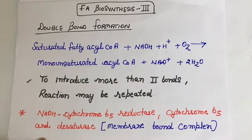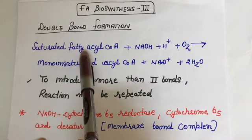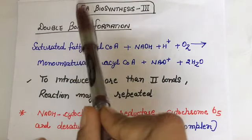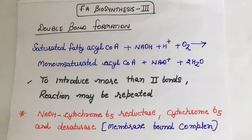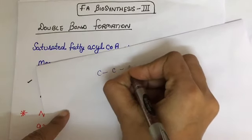So what is happening here is that double bonds are getting introduced into this saturated fatty acyl coenzyme A. Saturation means when there is no presence of double bond and each side of carbon is occupied with hydrogen.